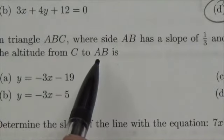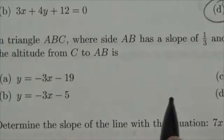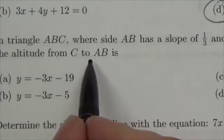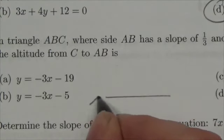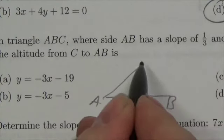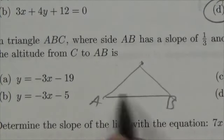altitude from C to AB. We need to find the equation of the altitude. Now, if you think about your triangle - here's A, B, C - and this line here has